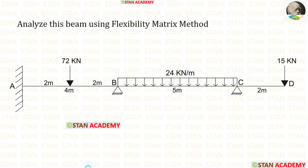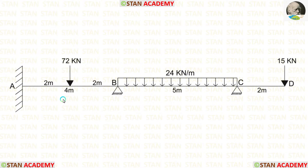Hello everyone. Today we are going to analyze this beam using the flexibility matrix method. Before analyzing, let us see the beam. In this beam there are two spans: span AB and span BC. Also there is an overhanging span CD.